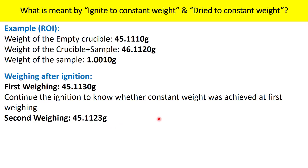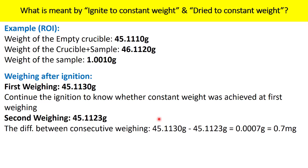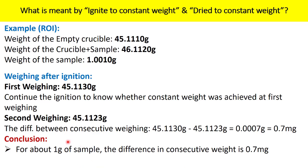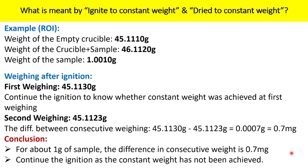Now you need to calculate the difference between these two weighings. The difference is 0.007 gram, or 0.7 milligram. The conclusion is: for about 1 gram of sample, the difference in consecutive weights is 0.7 milligram. The definition of constant weight requires the difference to be less than 0.5 milligram. But the difference is 0.7 milligram, so constant weight has not been achieved. You need to continue ignition.